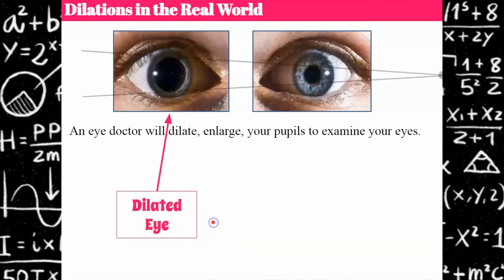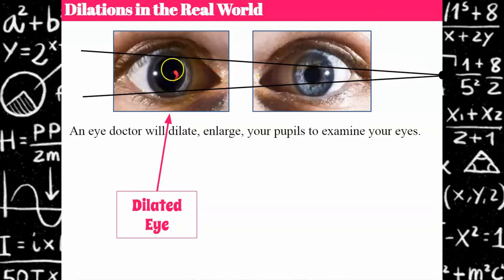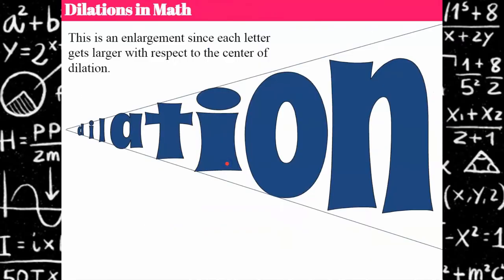Here's our dilated eye, and you can see the center of dilation on the right. If you draw lines out they should fit right in. There's a proportional relationship here — as we have our center of dilation it's enlarging, and it could keep growing bigger, but it's an eyeball so it has a limit to how big it can get.